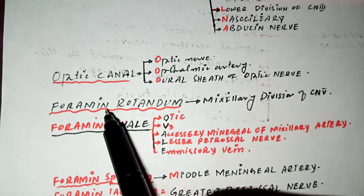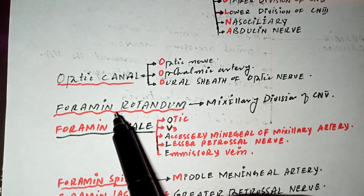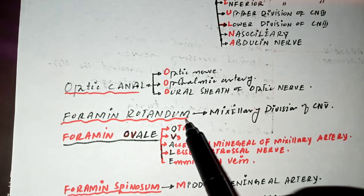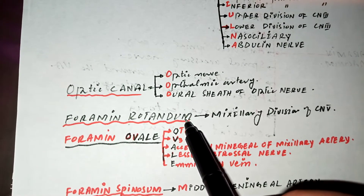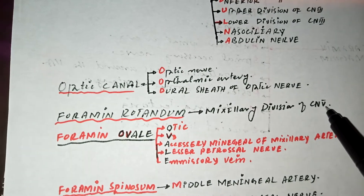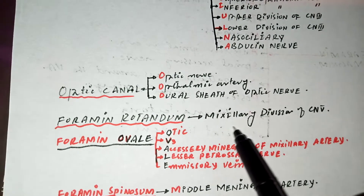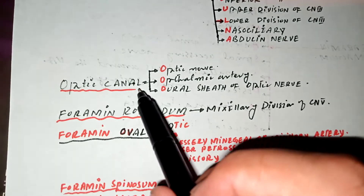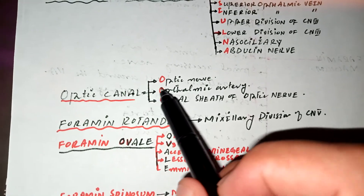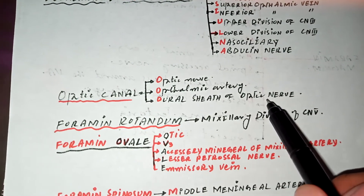Another foramina in the middle cranial fossa is the foramen rotundum. There is an 'M' at the end of 'rotundum,' so M stands for the maxillary division of the trigeminal nerve (cranial nerve V2). For the optic canal, the structures passing through it are the optic nerve, the ophthalmic artery, and the dural sheath of the optic nerve.